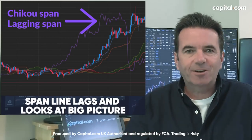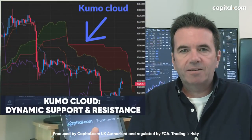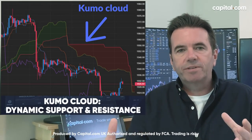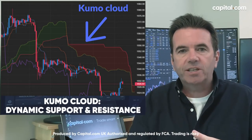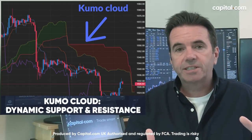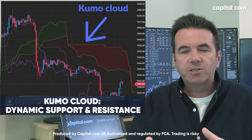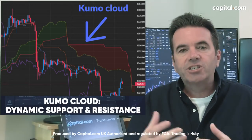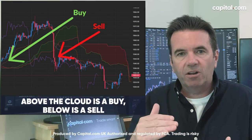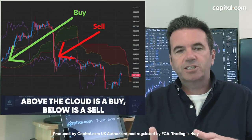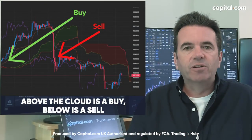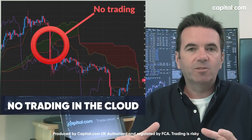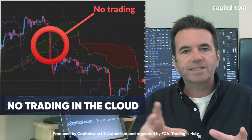This will make more sense when we see it on the chart. Then we have the cloud — the Kumo cloud — made out of Span A and Span B lines. This is our dynamic support and resistance. A wide cloud below the price suggests strong support; a wide cloud above the price, strong resistance. A narrow cloud below the price means weaker support, and the same — weaker resistance — for a narrow cloud above the price. As a general rule of thumb, when the price is above the cloud we're looking to go long; when it's below the cloud we're looking to go short. When the price is actually in the cloud, it represents indecision and arguably no trade should be taken.